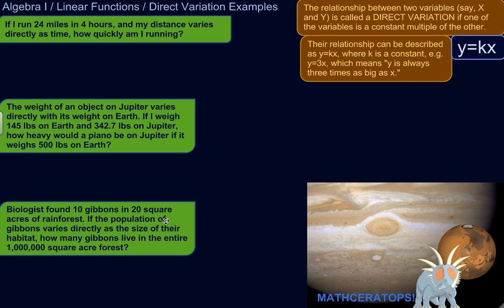The relationship between two variables, x and y, is called a direct variation if one of the variables is a constant multiple of the others. What does that mean?